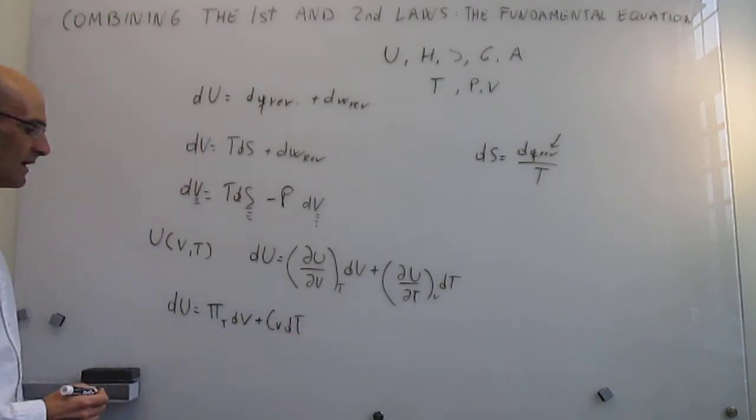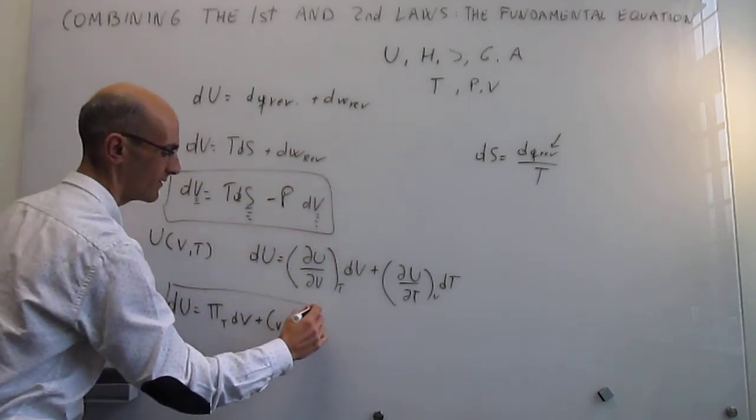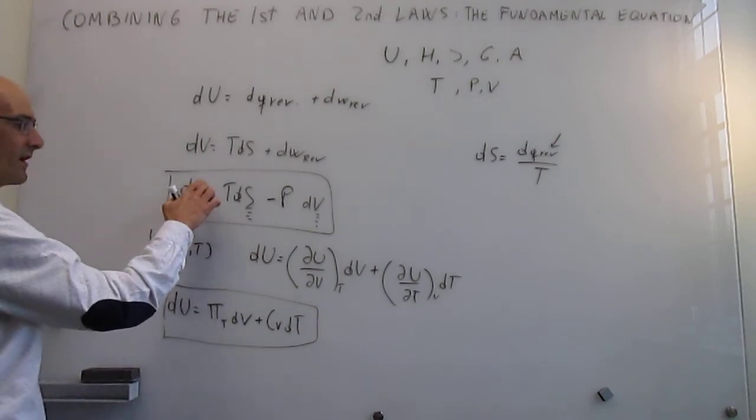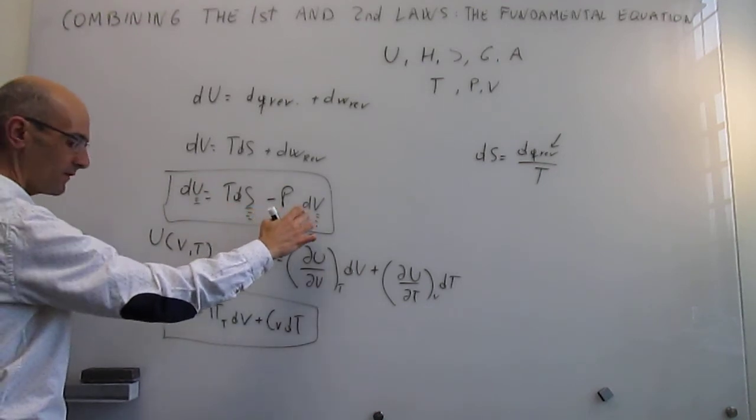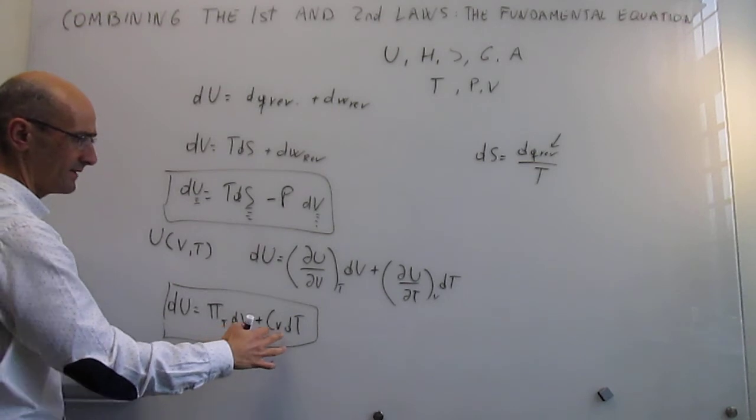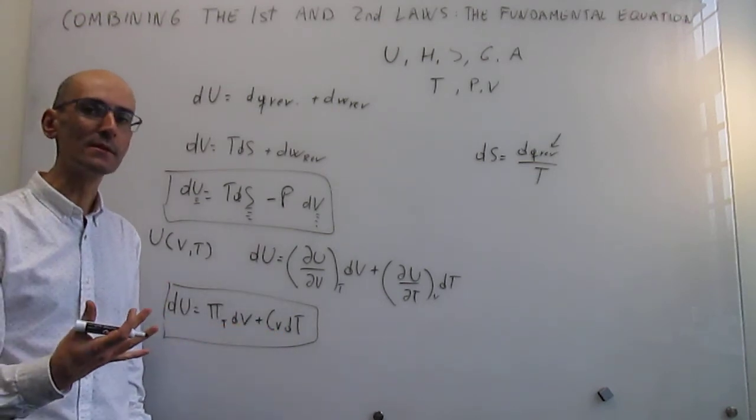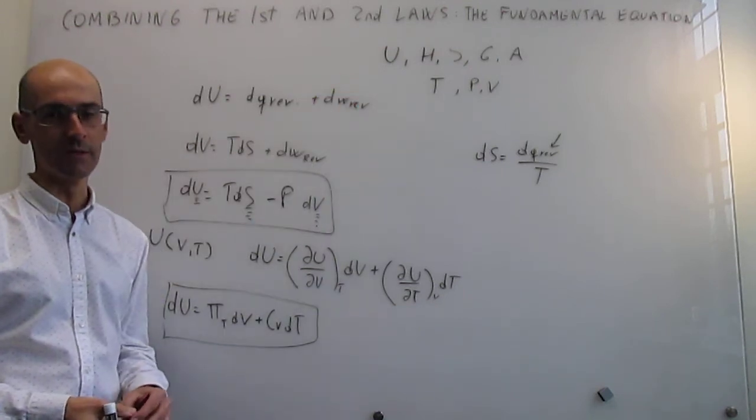So notice that we have here two different expressions for the dependence of the internal energy on variables. So here you have the internal energy as a function of entropy and volume, and here you have the internal energy as a function of volume and temperature. This gives you kind of a first glimpse of how rich the relationships between these state functions are going to be.